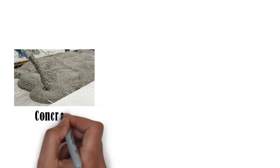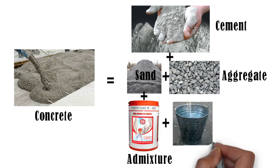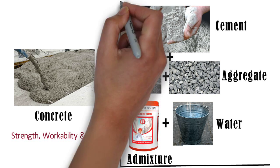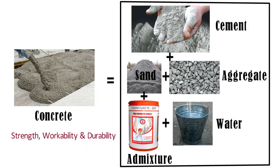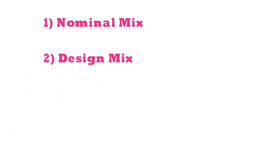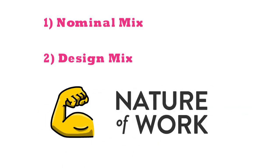Hello friends. Concrete is made up of mixing cement, sand, aggregate, admixtures and water. The strength, workability and durability of concrete depends on the mixing proportions of its ingredients. Normally there are two types of methods used for proportioning different ingredients: one is nominal mix and second is design mix of concrete. Selection of the type of concrete mix depends on requirement of strength and nature of work. In this video we will discuss the differences between nominal mix and design mix of concrete.